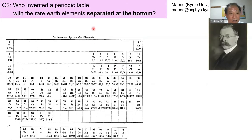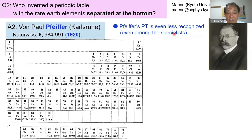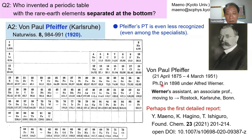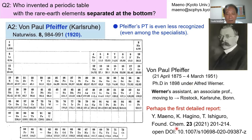Who invented the periodic table with rare earth elements separated at the bottom for convenience? This person is Pfeiffer, whose name is even less recognized even among specialists. He published this periodic table in 1920 and was actually a student of Alfred Werner. Pfeiffer later took the prestigious Kekulé professorship, so he was a well-known chemist, but his contribution to the periodic table is really little known. In this paper we introduce the details of his 1920 work.